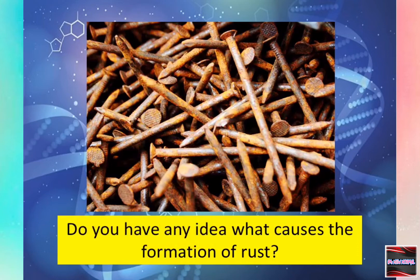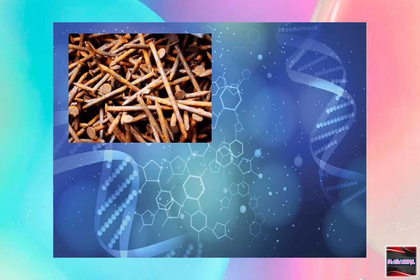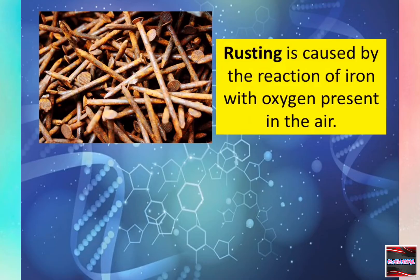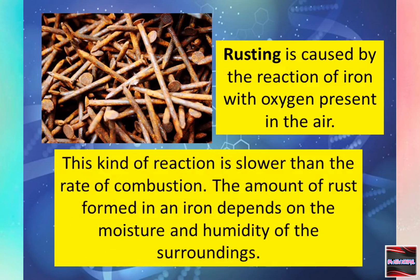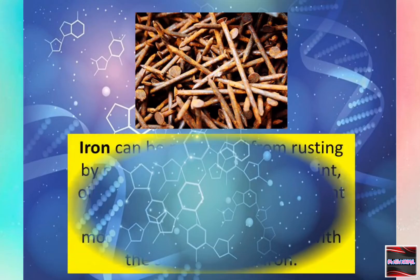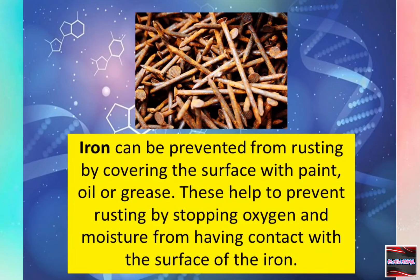Do you have any idea what causes the formation of rust? Rusting is caused by the reaction of iron with oxygen present in the air. This kind of reaction is slower than the rate of combustion. The amount of rust formed on iron depends on the moisture and humidity of the surroundings. Iron can be prevented from rusting by covering the surface with paint, oil, or grease. These help to prevent rusting by stopping oxygen and moisture from having contact with the surface of the iron.